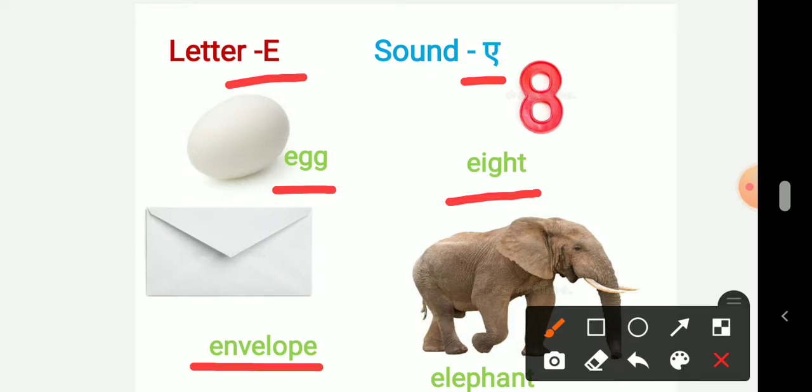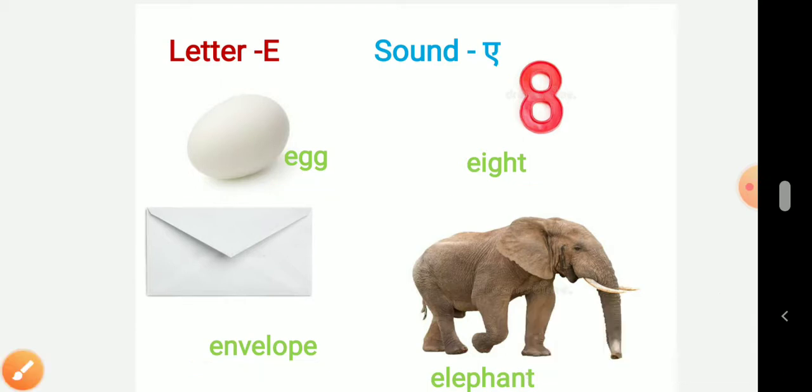Third picture, envelope. So envelope. E-N-V-E-L-O-P-E, envelope. So A, envelope. And the last picture is elephant. So E-L-E-P-H-A-N-T, elephant. So here the starting sound is A.